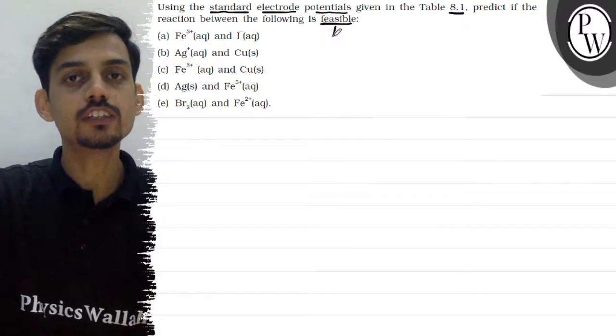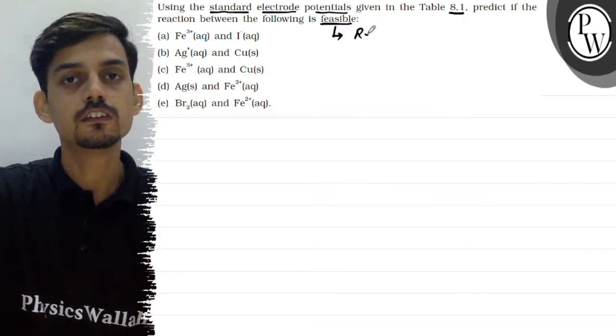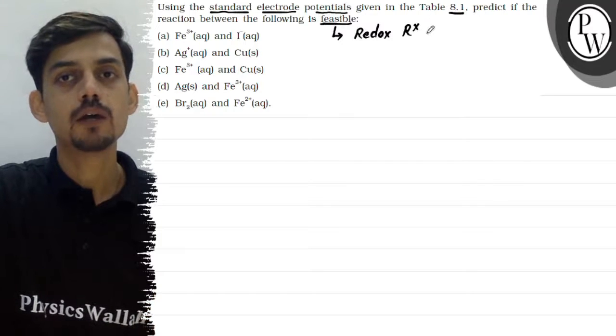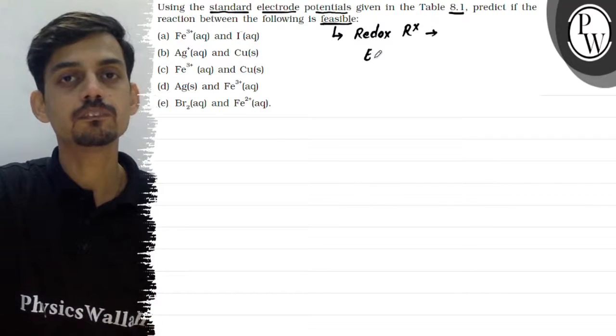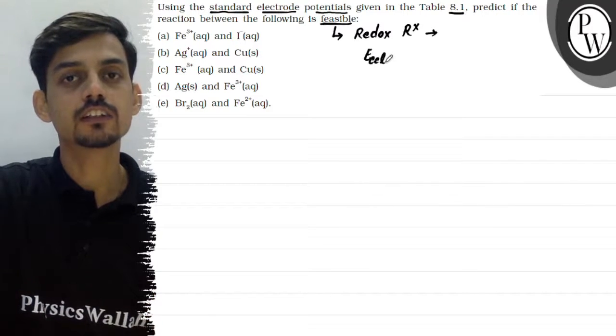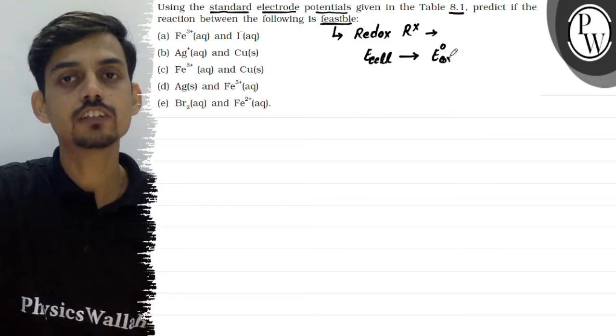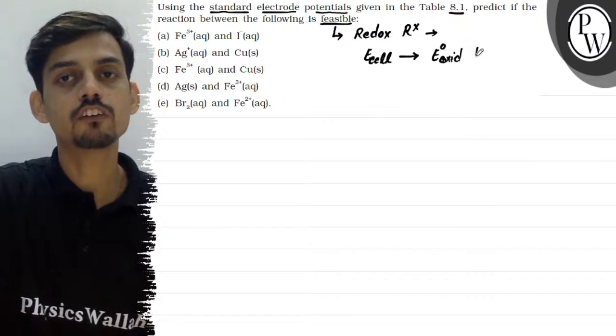For a redox reaction, we can check the feasibility by checking the E cell value. E oxidation and reduction - oxidation and reduction are our half reactions. And any half reactions ko mila ke jo hume E milta hai, E of oxidation reaction and E of reduction reaction.